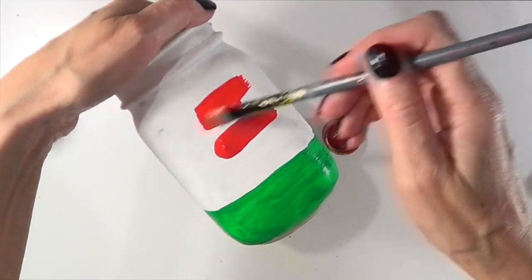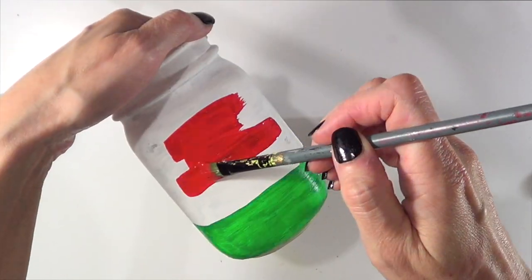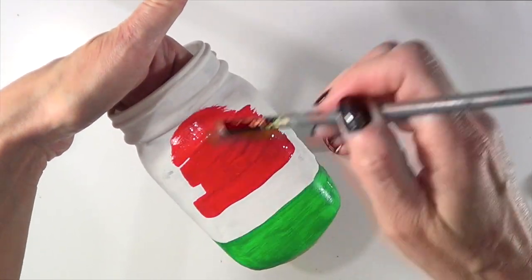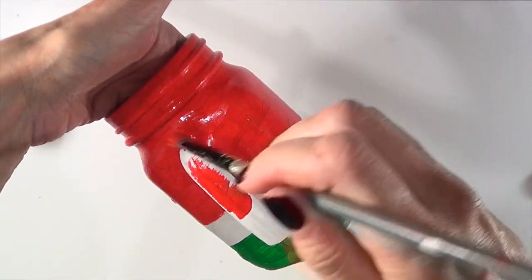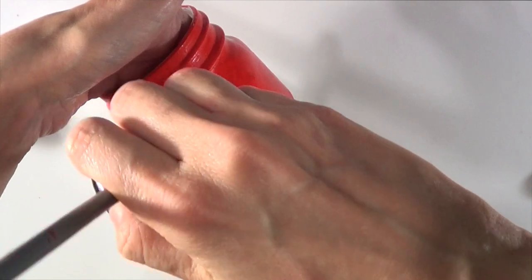Then I'm painting the top part with red, covering almost all of the mason jar because obviously the red part takes up the most of a watermelon. Covering with just one coat and I just let it dry.